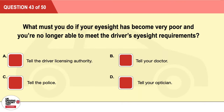Question 43: What must you do if your eyesight has become very poor and you're no longer able to meet the driver's eyesight requirements? A: Tell the driver licensing authority. B: Tell your doctor. C: Tell the police. D: Tell your optician. The correct answer is A: tell the driver licensing authority.